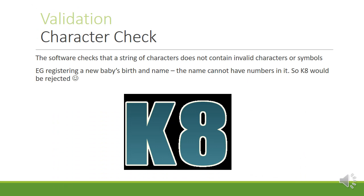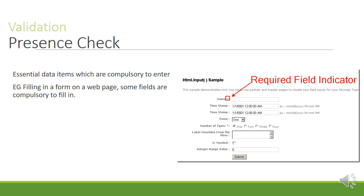A character check is when the software checks that a string of characters does not contain invalid characters or symbols. For example, when registering a baby's new birth name, the name cannot have numbers in it — so a name like K8 would be rejected. A presence check is when certain fields are essential and compulsory to enter.